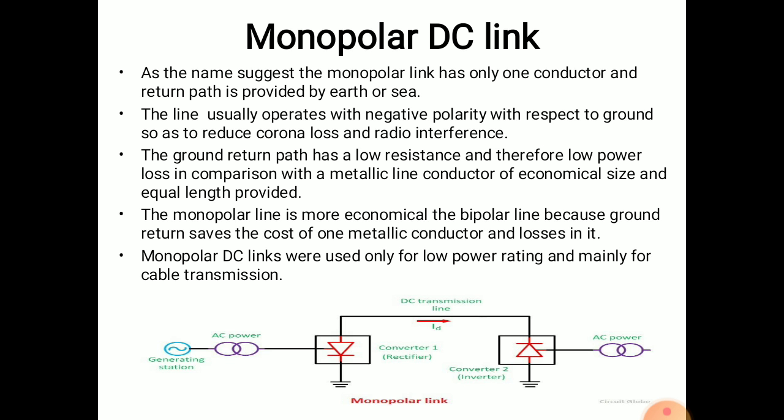In some cases, monopolar lines installed earlier are converted into a bipolar system by adding an additional substation pole and transmission pole. Monopolar HVDC lines have only a rating equal to half of the corresponding bipolar rating.